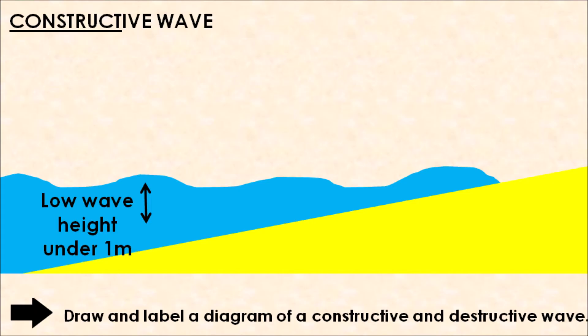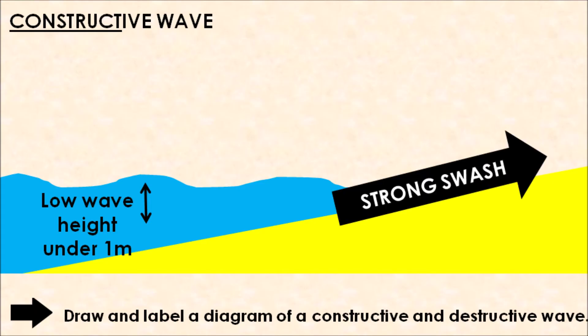Constructive waves have a relatively low wave height, typically under one meter in height. Constructive waves are known for having really strong swash. All their energy goes into the approach and washing up onto the coastline, and because of that, they can carry and transport a lot of material onto the coastline.